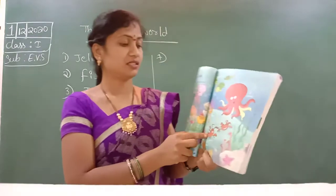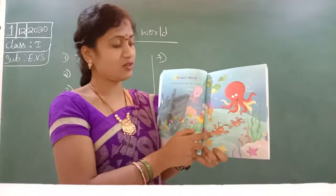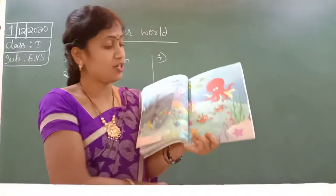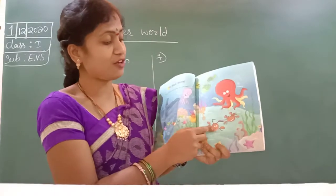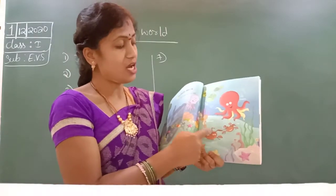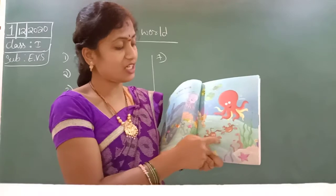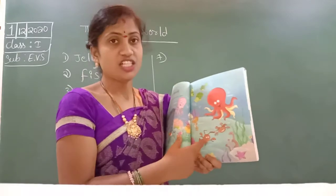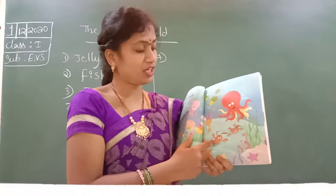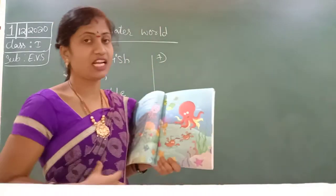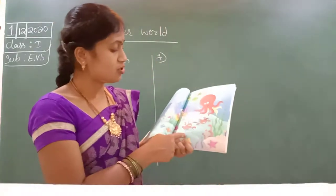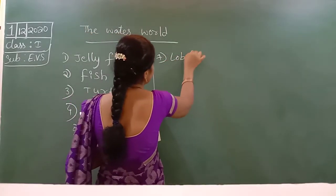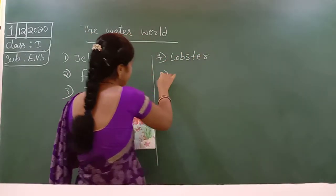Next, lobster. See here — it looks like a crab but some different. A little bit different. It's looking like arms like a crab and lobster, but the body shape is looking like a fish — it's totally round. So, lobster. Next.